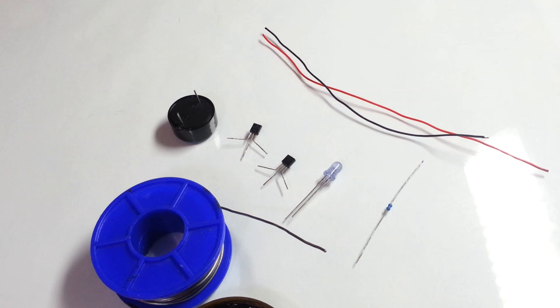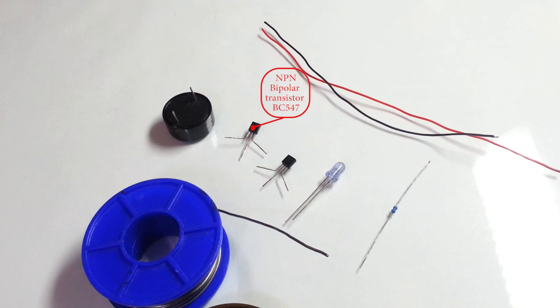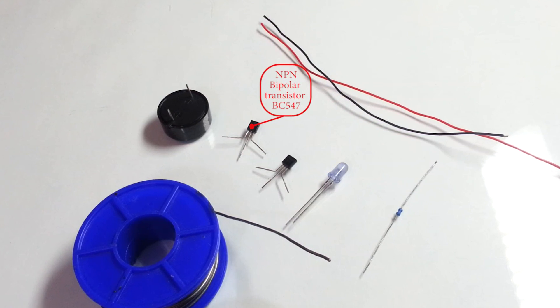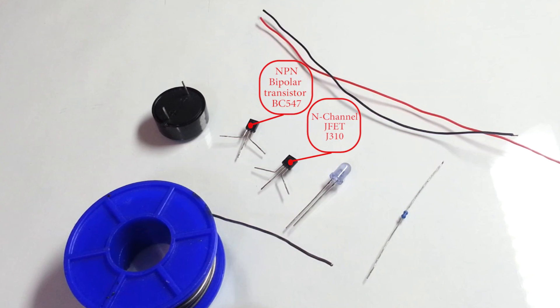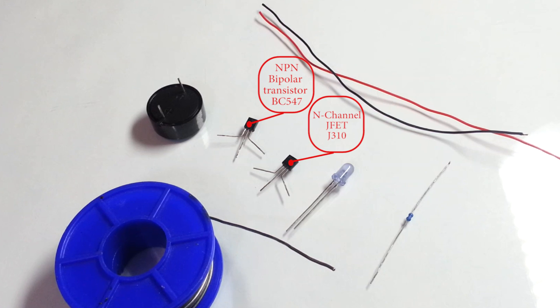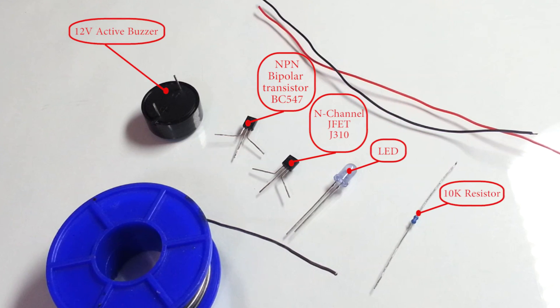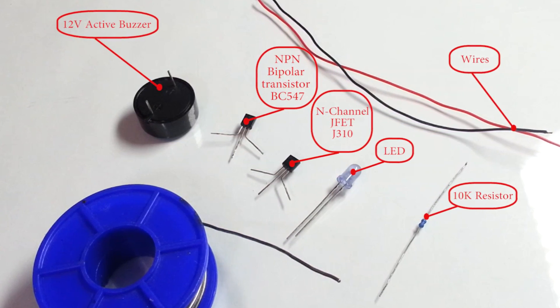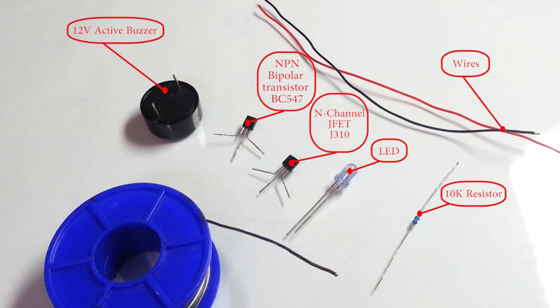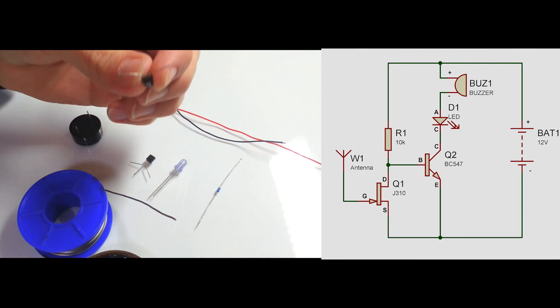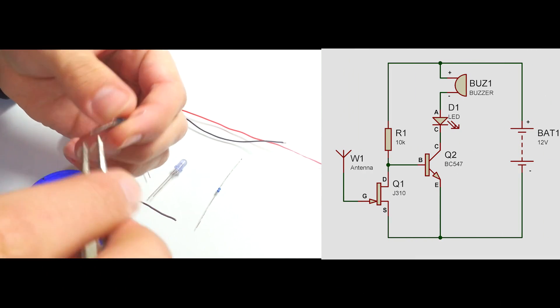For building this device I will use two transistors, one of which is regular bipolar transistor and second JFET transistor. Also we'll need an LED, 10k ohm resistor, an active buzzer and a couple of wires to connect this device to a power source. On the right you can see the schematic. And let's start soldering.